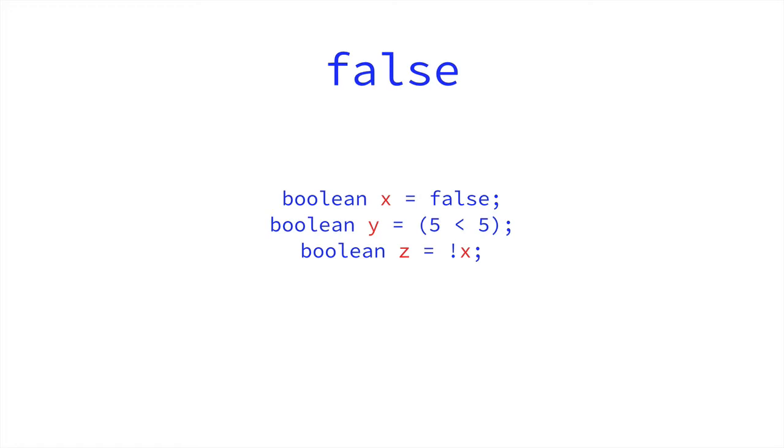However, z is true because it is not x. Because that exclamation mark means not or the inverse. So the inverse of x is true because x is false. And so z is true.